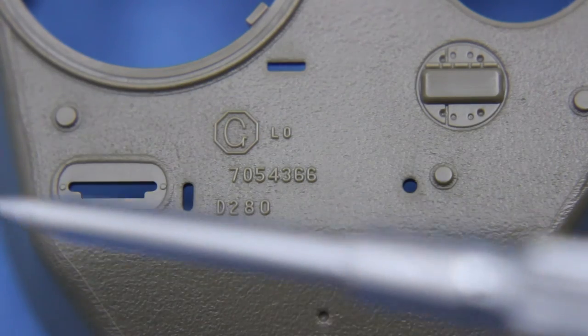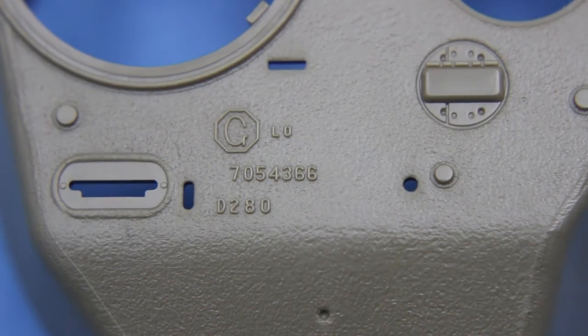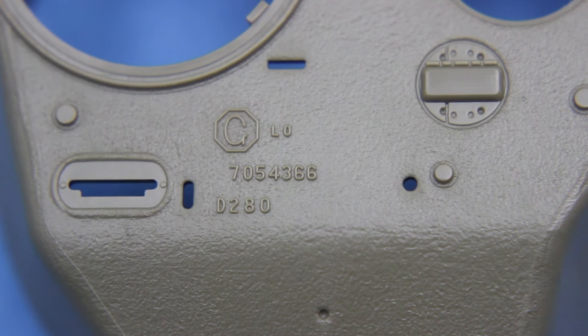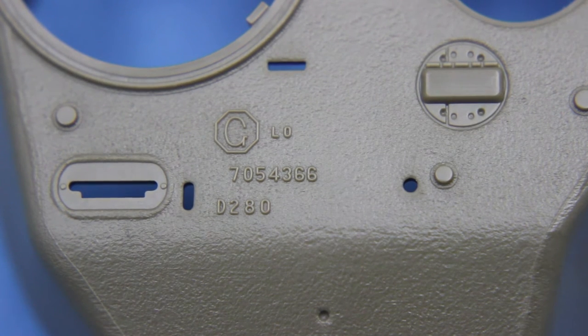There is a slight mould line down here. That'll need to be removed. Without disturbing the cast texture. Which might be a bit of a problem. But probably with a bit of care and common sense. Shouldn't disturb the texture too much.